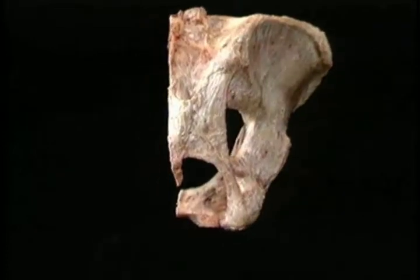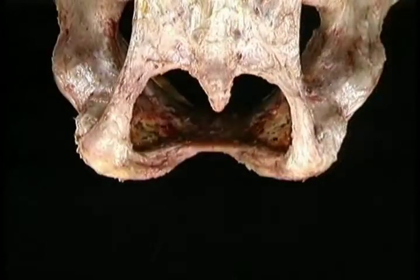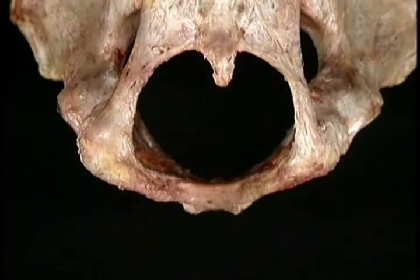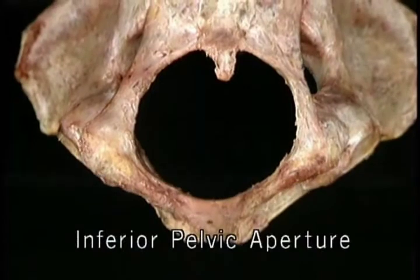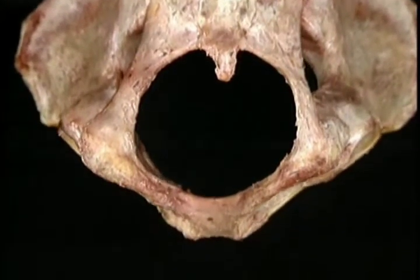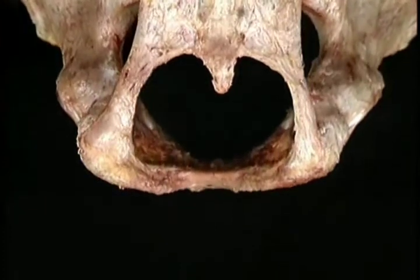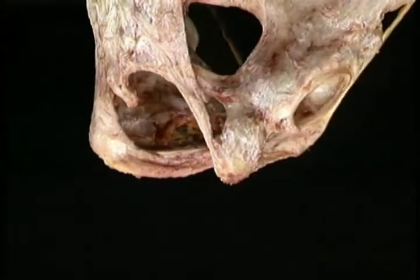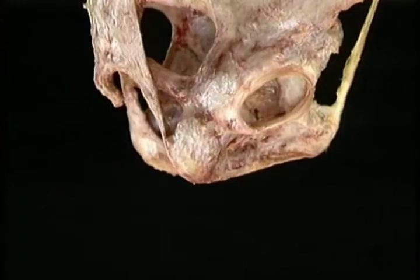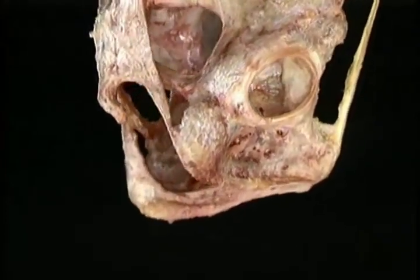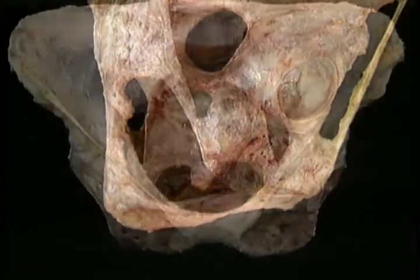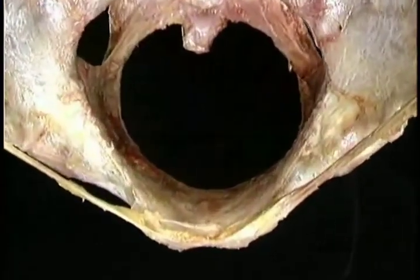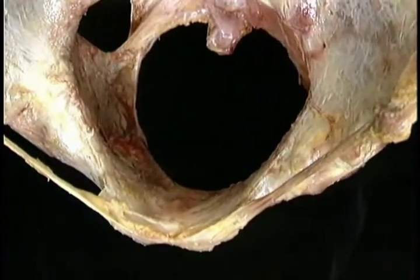Let's take a look at a complete pelvic specimen from behind and from below. The sacrotuberous ligaments behind and the ischiopubic rami in front form the boundaries of an opening beneath the pelvis called the inferior pelvic aperture. Seen from beneath, the opening looks like an ellipse, but it's not a flat ellipse. Because of the steep downward curve of the sacrotuberous ligaments behind and the slight downward slope of the ischiopubic rami in front, the ellipse has a marked bend in it. Here's the inferior pelvic aperture seen from above.